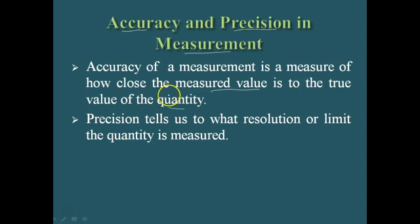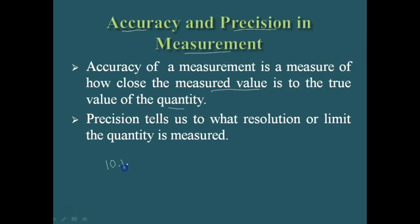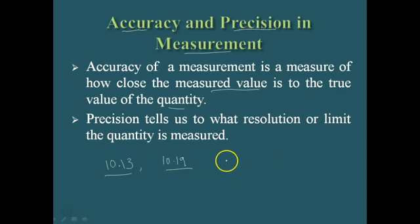For example, if the true value of a quantity is 10.13 and the value we got is 10.19, the answer is not that accurate — there is a little difference. But if we get 10.12, we can compare it to the true value and say it is accurate, because the answer is nearer to the true value.